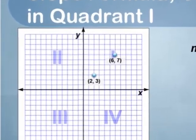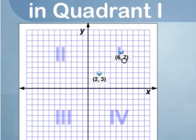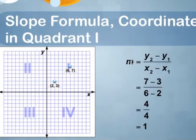Here are two points in quadrant 1. This point has coordinates 2, 3, and this point has coordinates 6, 7. To find the slope of the line that crosses these two points, use the slope formula.